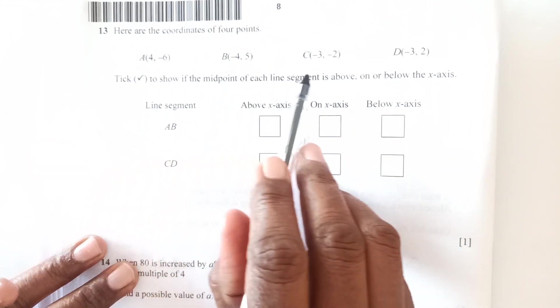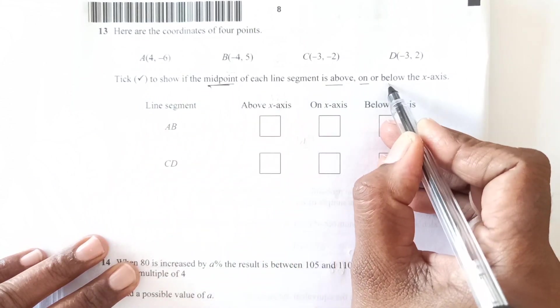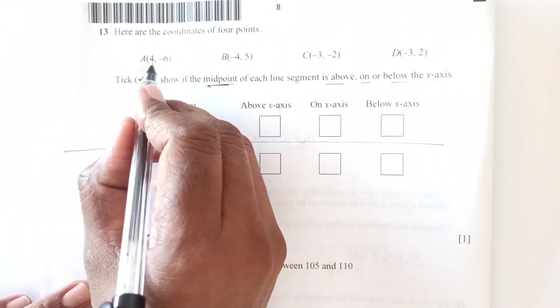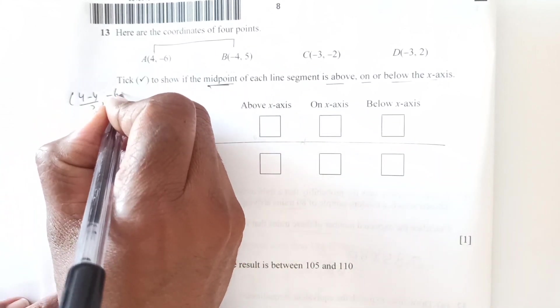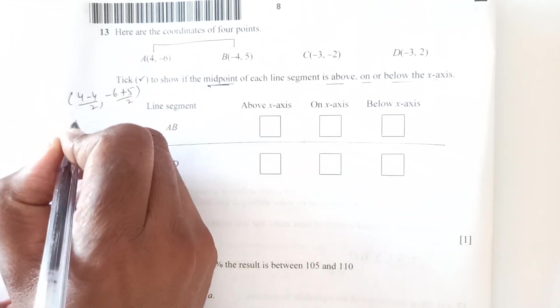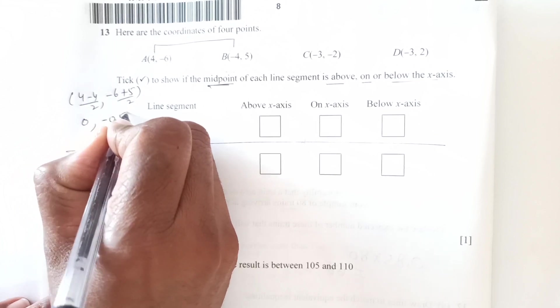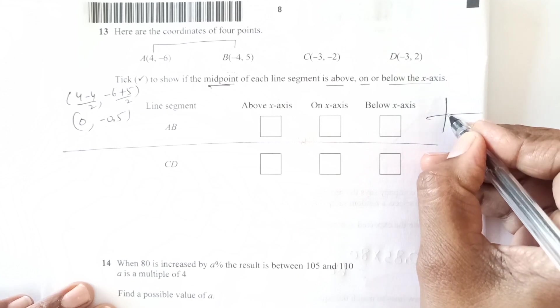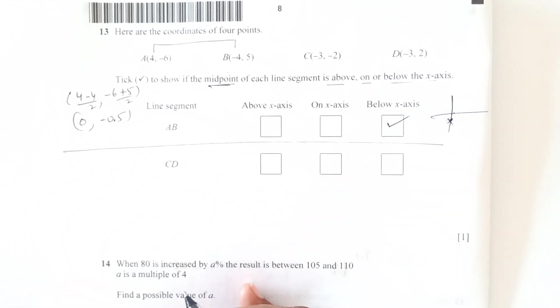Question number 13. Here are the coordinates of 4 points A, B, C and D. Tick to show the midpoint of each line segment is above, on or below the x axis. So we will find out midpoint of A, B first. Midpoint of A, B we are going to add the x coordinates, that is 4 minus 4 over 2. This is negative 6 plus 5 over 2. So this is 0 and this is negative 1 over 2, that is negative 0.5. So negative 0.5, x 0 is here and negative 0.5 comes here. So that is below the x axis. So this is going to be below x axis.